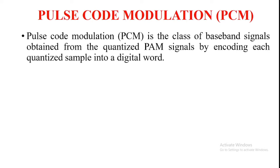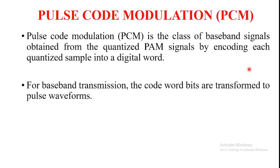Now coming to the definition of pulse code modulation: PCM is a class of baseband signals. There are two types of digital transmission — baseband pulse transmission and passband pulse transmission. PCM is the type of baseband signal which is obtained from a quantized PAM signal by encoding each quantized sample into a digital word for baseband transmission, where the code bits are transformed to pulse waveforms.